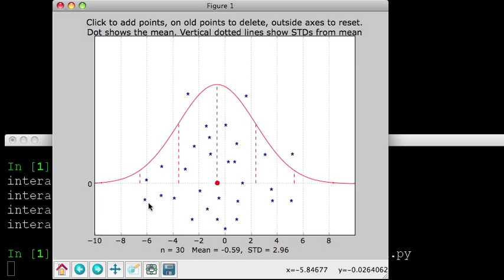So you can get a feel for how data is distributed with respect to the normal distribution. If I click outside the axis here, then I reset it.